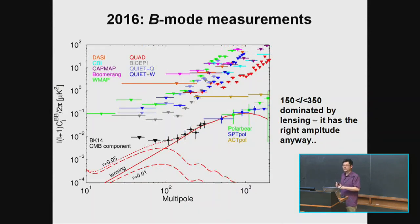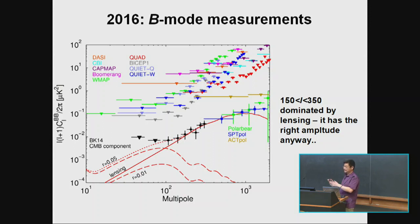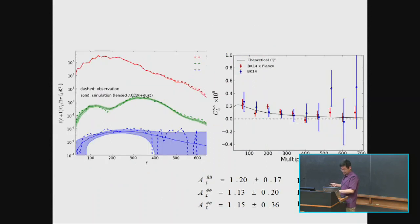We just put out another paper yesterday about lensing. Between L of 150 and 350 we've detected a lot of B-modes that's definitely not dust — it follows the lensing power spectrum with the right amplitude, and we know lensing should be there. We went ahead with the analysis using a method that combines E-mode polarization measured by BICEP-Keck and the B-mode also measured by BICEP-Keck to do lensing reconstruction.